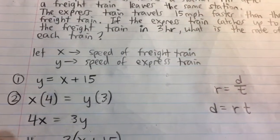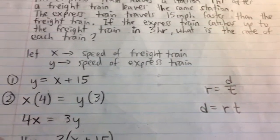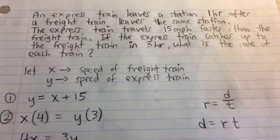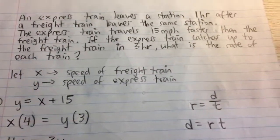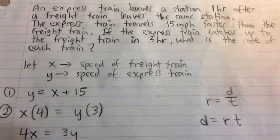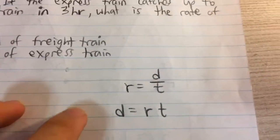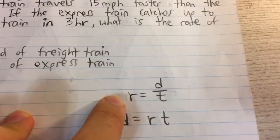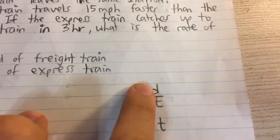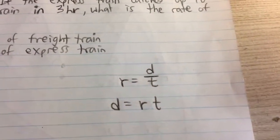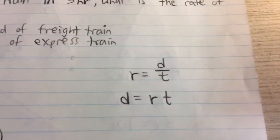The second equation we can set relates the distance that they have traveled, because when they meet, when the express finally catches up, they have traveled the same distance. We know that the rate or speed of an object is the distance it travels divided by time. So if we solve for distance, we get rate times time, or speed times time.